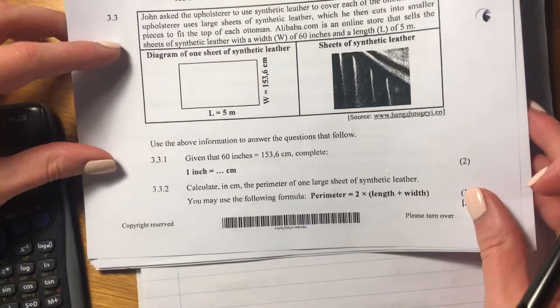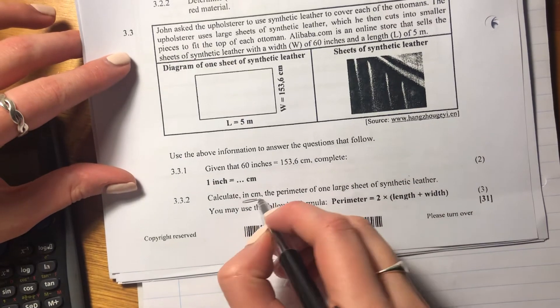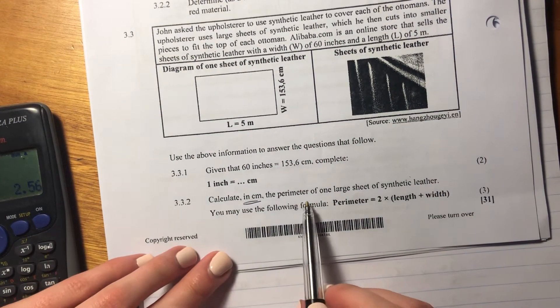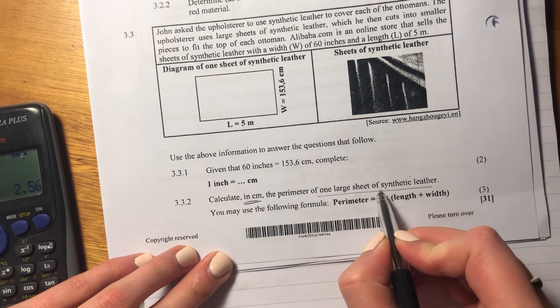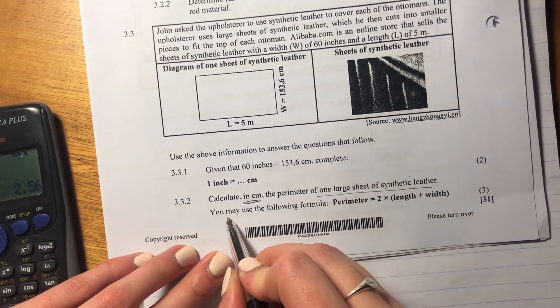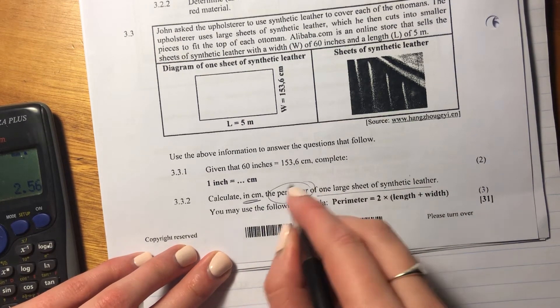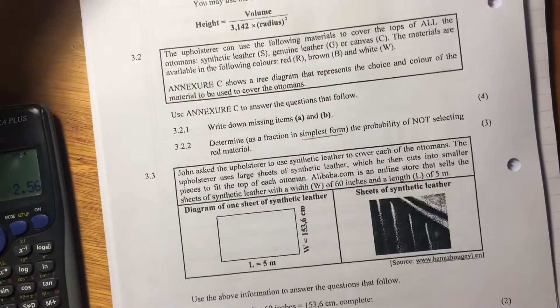Let's now go to the next question. It says, calculate in centimeters. Important, they're telling us how they want it. The perimeter of one large sheet of synthetic leather, you may use the following formula. So it wants the perimeter. What does the perimeter mean, guys?